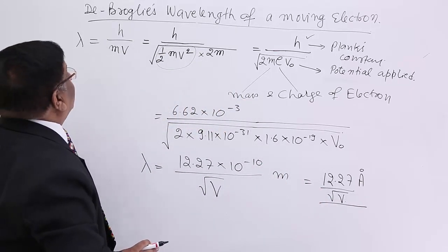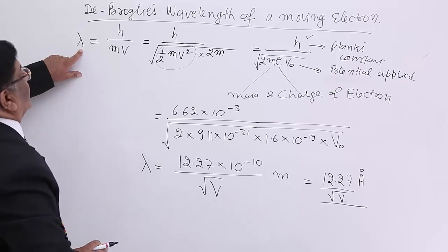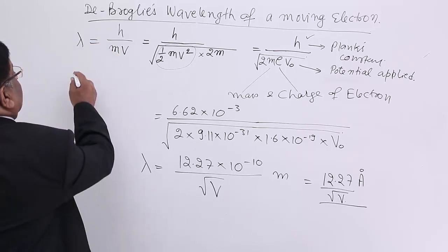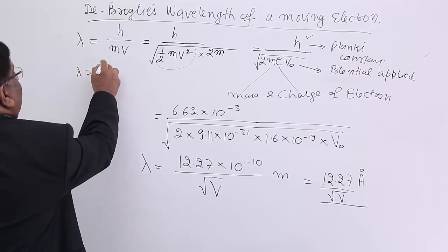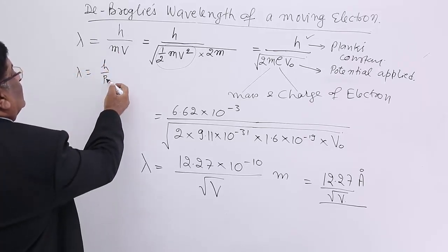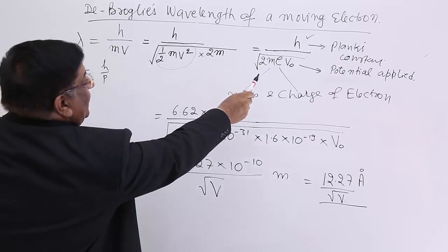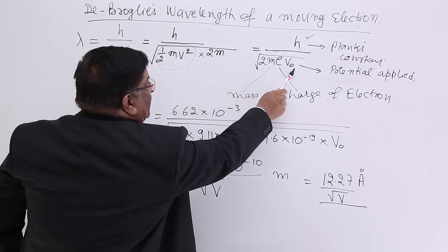Let's revise it once again. According to de Broglie's wavelength, the formula is h/mv. For photons, our formula was λ = h/p. For material, it is MV. We converted this to the formula h/√(2MEV₀).